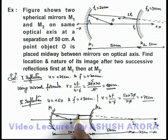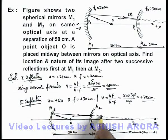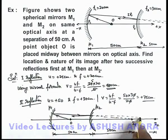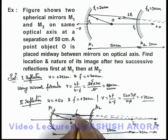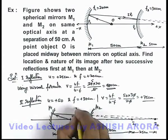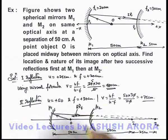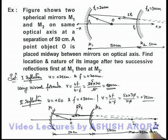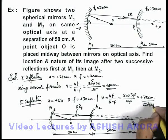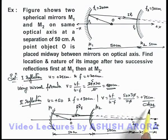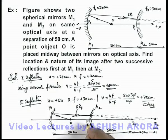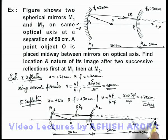So these light rays are reflected in such a manner that these appear to be coming from the point I2. These are the final reflected rays after two reflections. This is the final image which we are required to find. The final image is at 75 centimeters behind the second mirror and it is virtual.